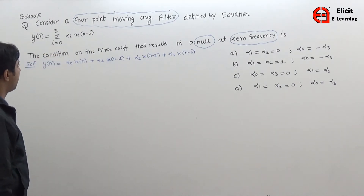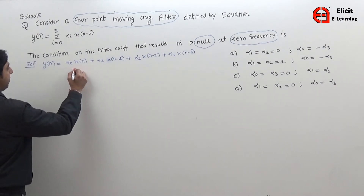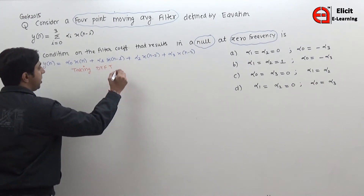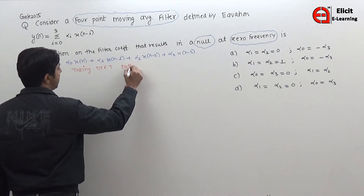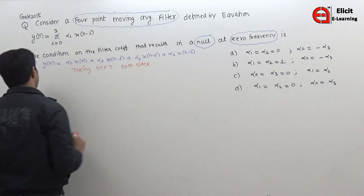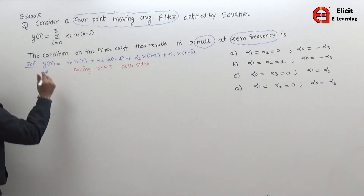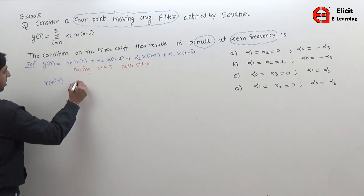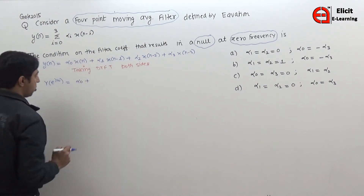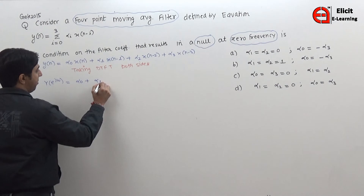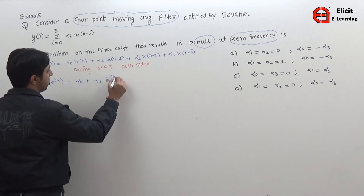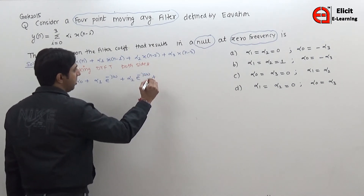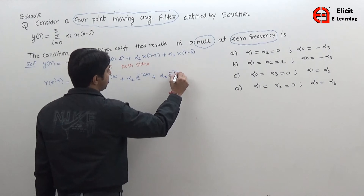Taking the Discrete Time Fourier Transform (DTFT) of both sides: the DTFT of y(n) gives Y(e^(jω)), and taking the DTFT of the right-hand side gives α₀ plus α₁·e^(−jω) plus α₂·e^(−j2ω) plus α₃·e^(−j3ω), all multiplied by X(e^(jω)).